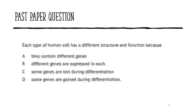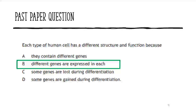The correct answer is B — different genes are expressed in each. The difference between a muscle cell and a nerve cell is the proteins that they produce. They both have the same DNA molecule and all the same genes; genes only express — i.e., build proteins from — the ones that are relevant to that cell type. You don't contain different genes, and you don't lose or gain genes — you simply use or express those which are relevant.